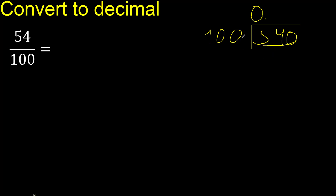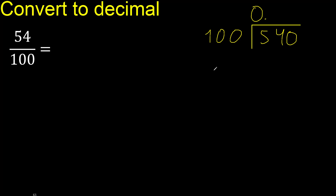540 is not less than 100. Multiply by which number is nearest to 540 but not greater. 100 multiplied by 6 is 600 — 600 is greater, therefore use 5. Multiply by 5 is 500.